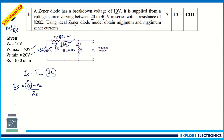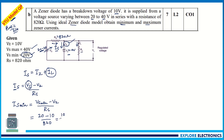IS_minimum can be obtained using VS_minimum. IS_min = (VS_min − VZ) / RS. Substituting: VS_min = 20 volts, VZ = 10 volts, RS = 820 ohms. So IS_min = (20 − 10) / 820 = 10 / 820 = 0.01219 amperes, which we can write as 12.19 milliamps. This is the minimum value of IS.